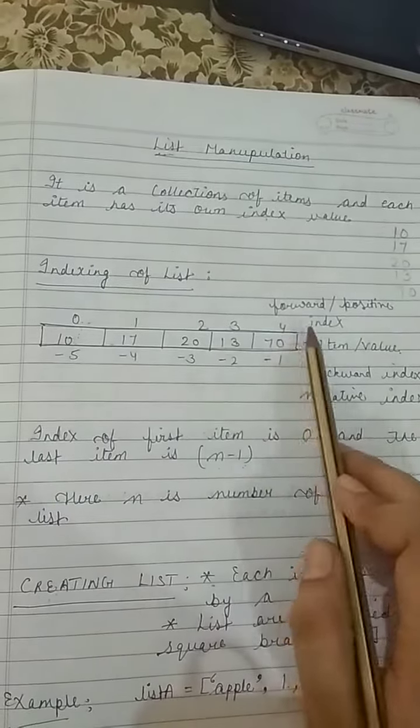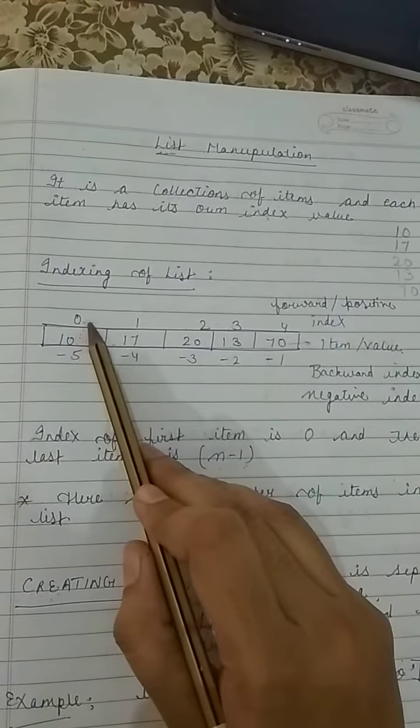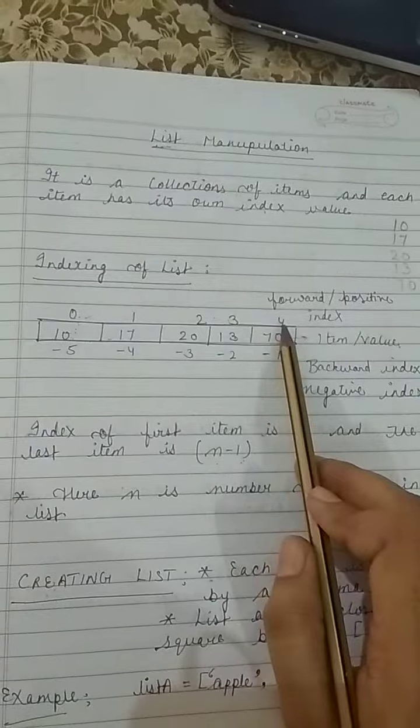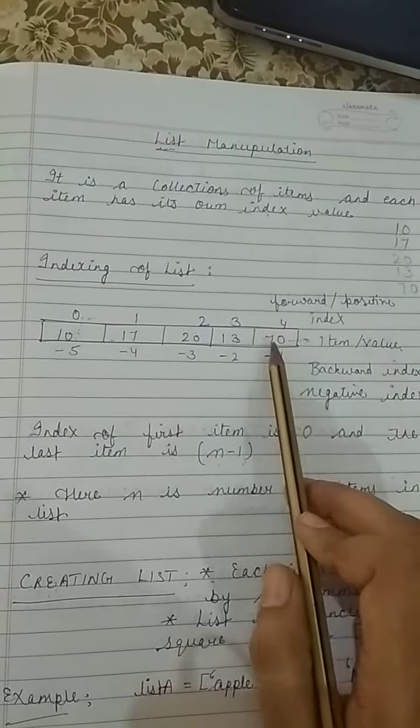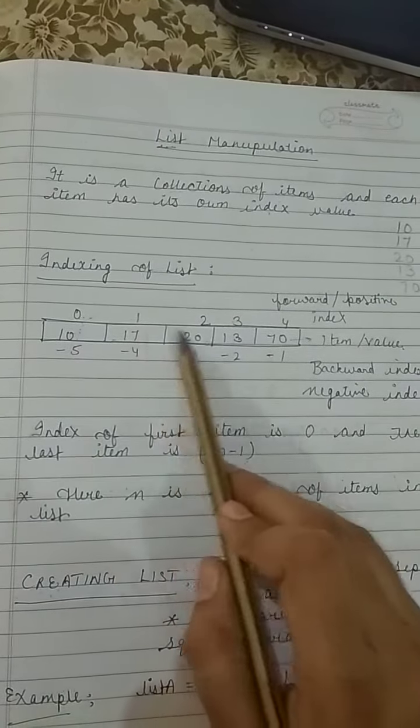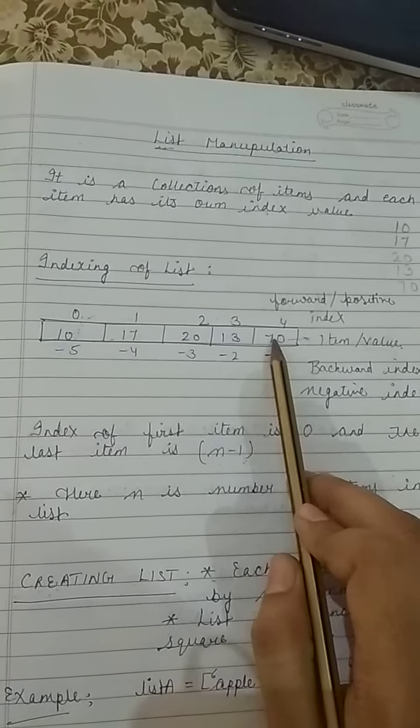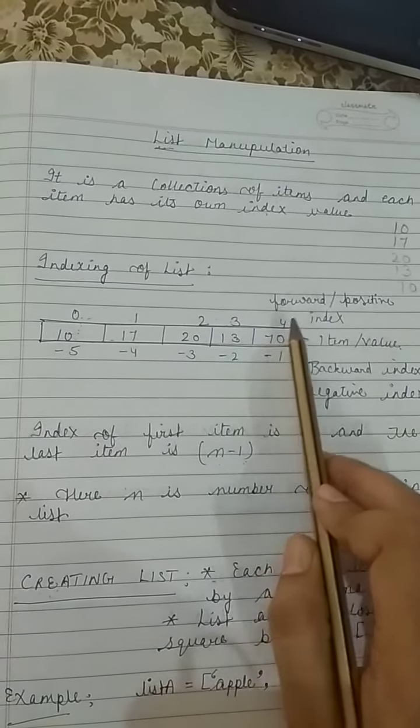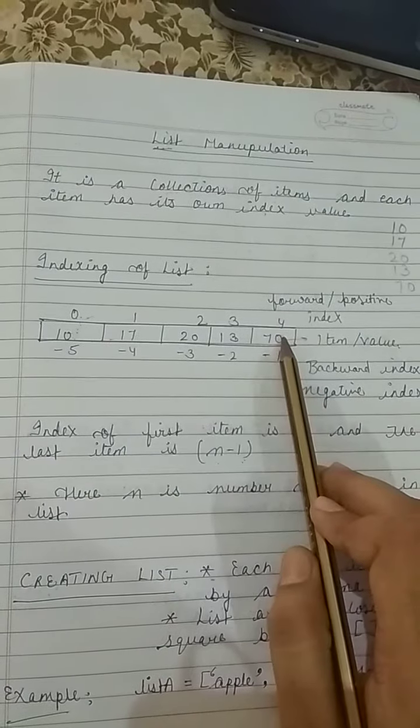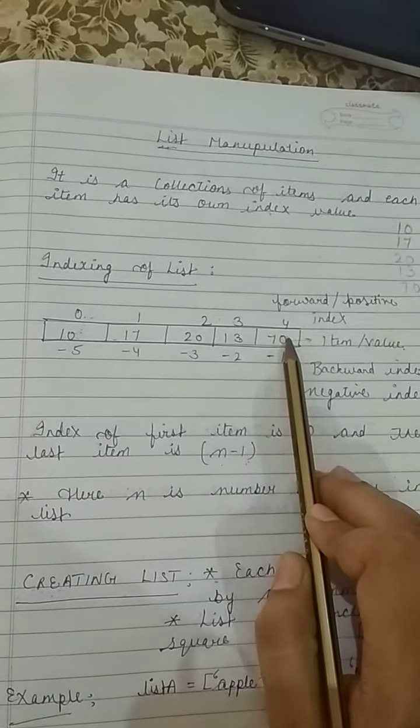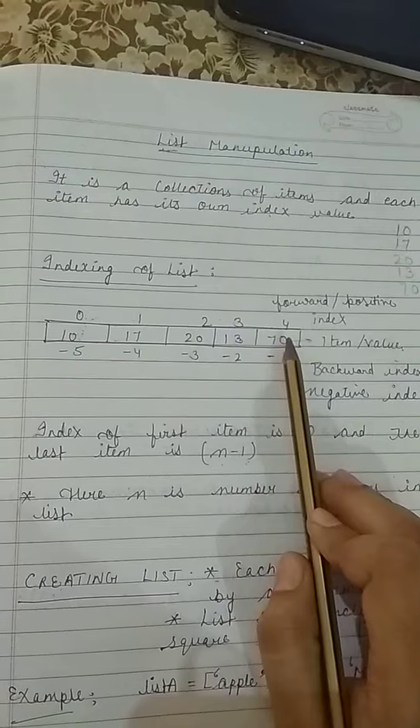Index value always begins with 0. It starts with 0, and the last value depends on the number of items. Like 1, 2, 3, 4, 5. This list has 5 elements. So the index value of the last item should be n minus 1, where n is the total number of items. Like 5 items.